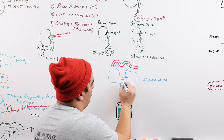The last etiology is exogenous alkali administration — specifically sodium bicarbonate infusions, sometimes given in acidosis, kidney failure, or high ICP. If you give a lot of sodium bicarbonate, you're directly delivering bicarbonate into the bloodstream, which jacks up the pH and can cause a metabolic alkalosis.